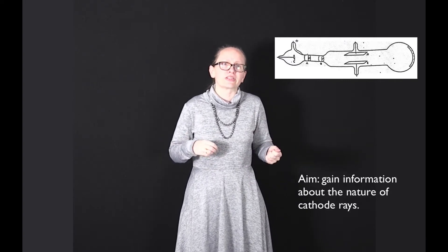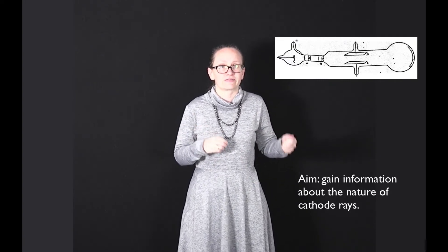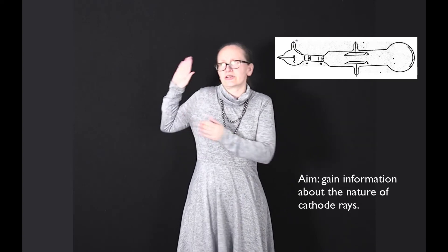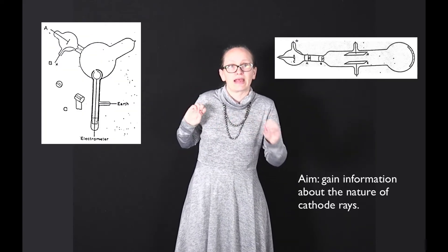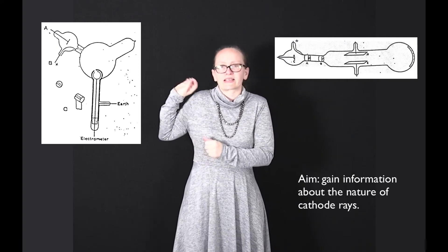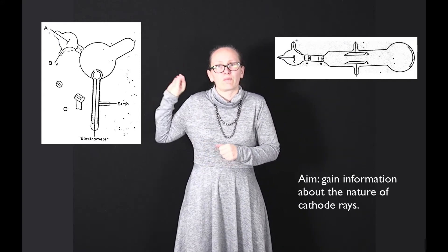He started by demonstrating that cathode rays had a negative charge. In order to do this, he used this apparatus shown in this figure taken from his own paper. In this apparatus, cathode rays are released from A.